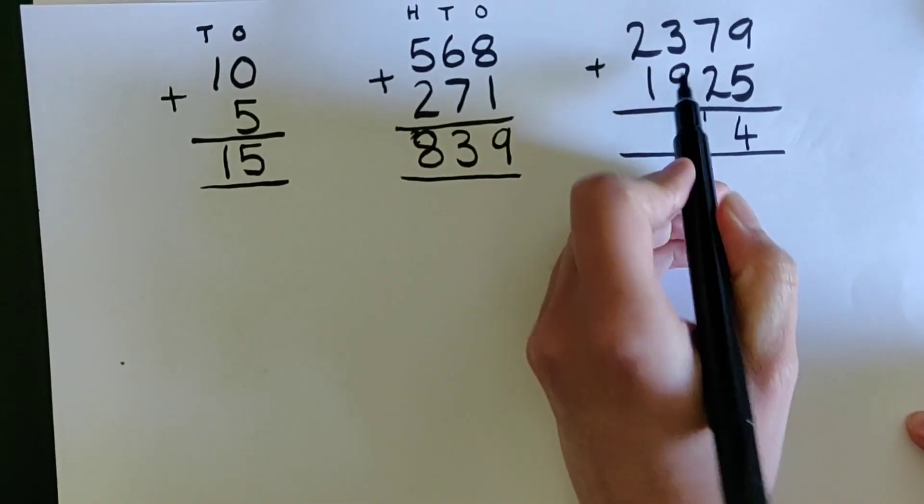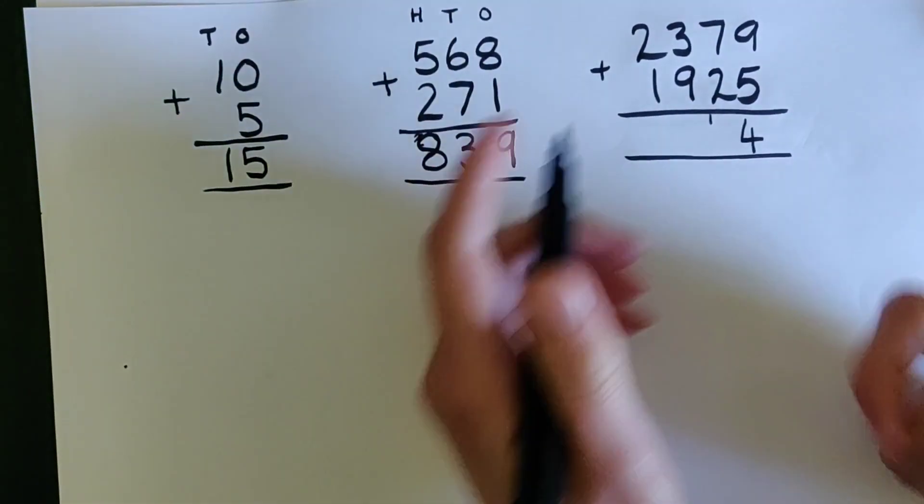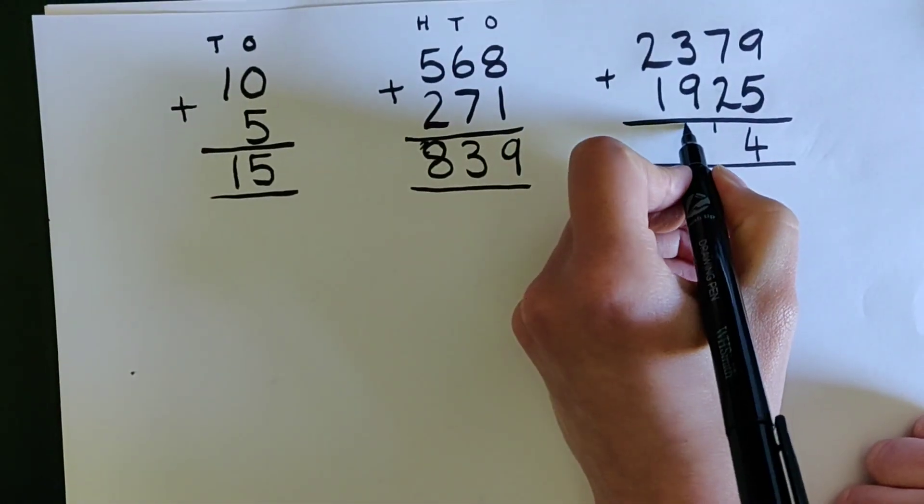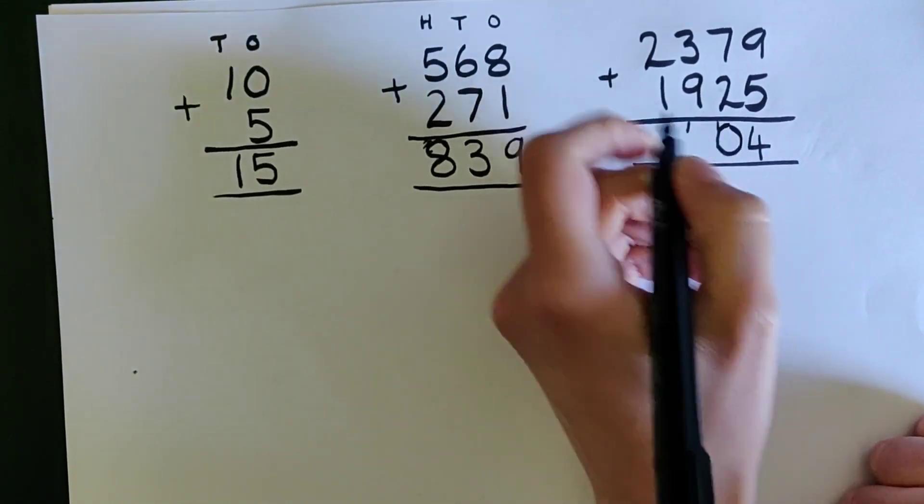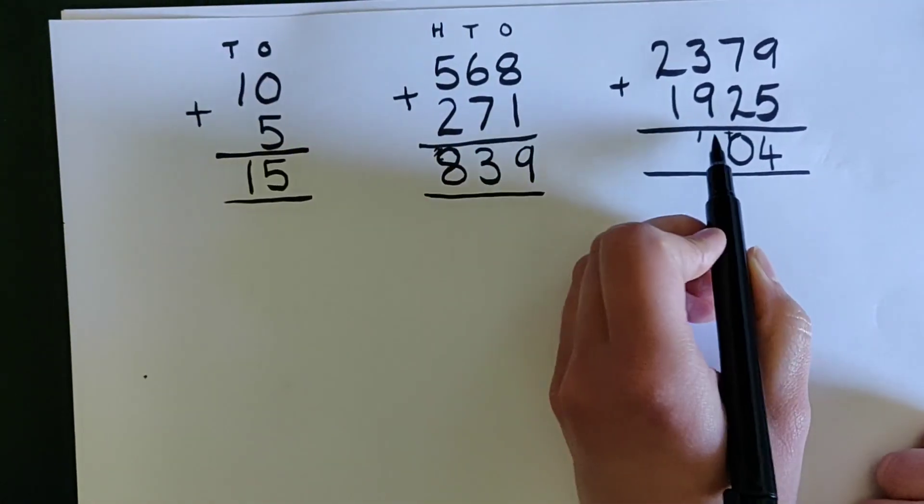7 add 2 add the teeny tiny one, 7 8 9 10. Make sure I've crossed out that one.